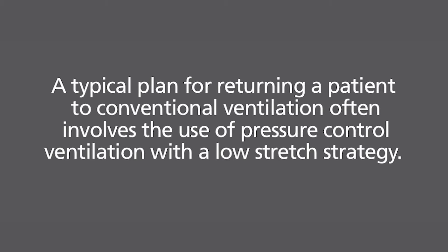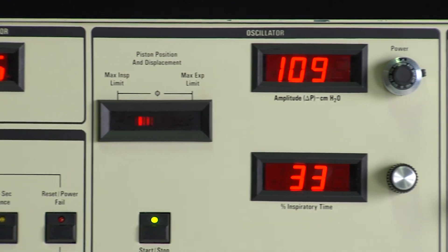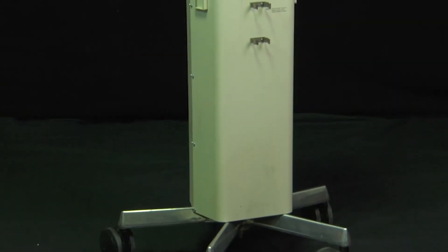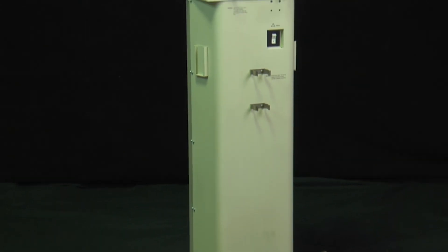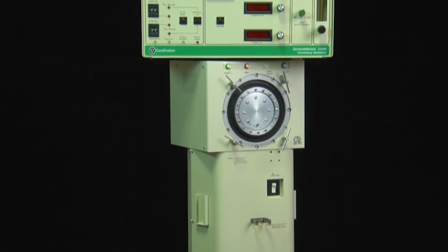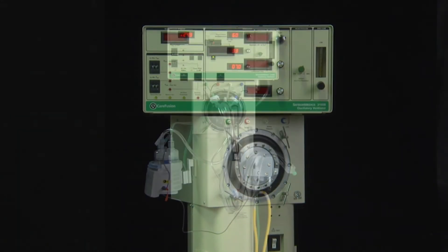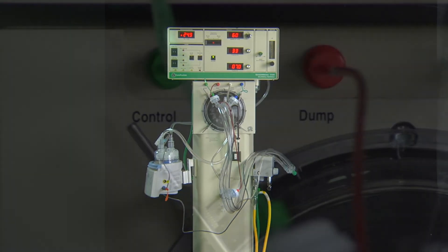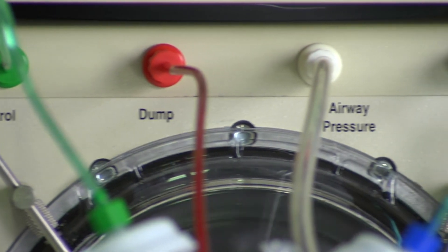A typical plan for returning a patient to conventional ventilation often involves the use of pressure control ventilation with the low-stretch strategy. Weaning from conventional ventilation would then follow individual institutional practice. This concludes our presentation on the 3100B High Frequency Oscillatory Ventilator. Should you have any further questions, please contact your product representative or technical support at the telephone number provided in your operator's manual.